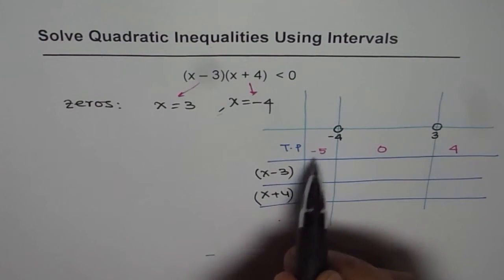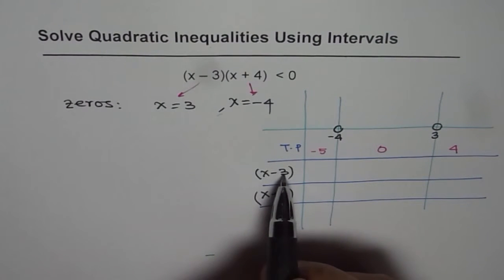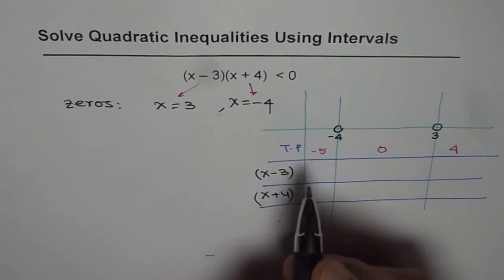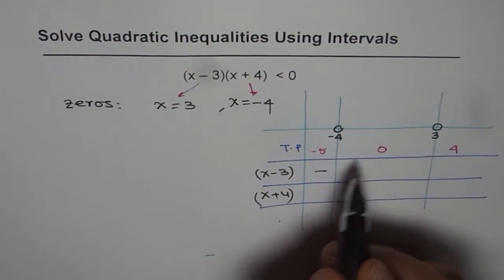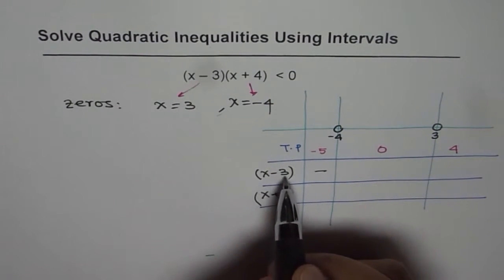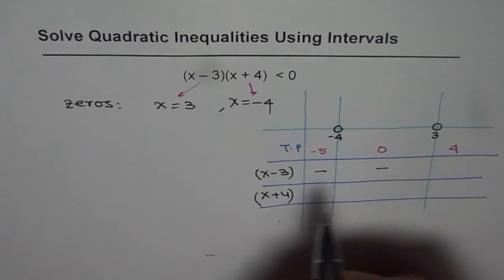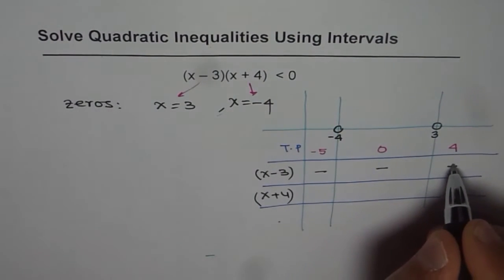If I put minus 5 in x minus 3, I get a negative answer. Well I am not interested in the value of minus 8. Negative is good enough for me. Negative 5 minus 3 is a negative answer. If I put 0 here, 0 minus 3 is negative. Let me write negative here. 4 minus 3 is positive.